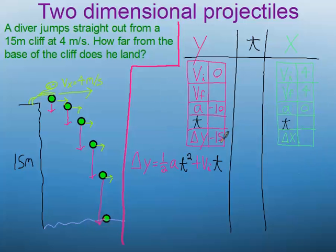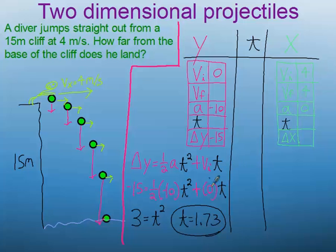Now, to calculate time, we're just going to use the old faithful equation. Delta y equals 1 half at squared plus vit. Usually when you're solving for time, that one's going to do the trick. After plugging the values in and just doing a little bit of math, I got that it took the diver 1.73 seconds to hit the water below.